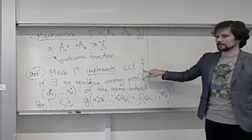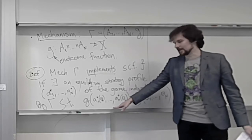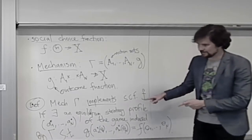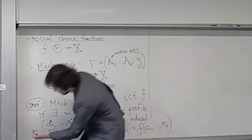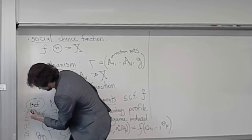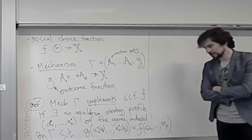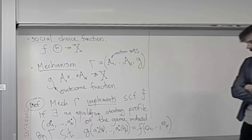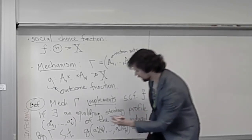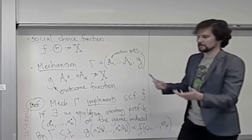However, I want to emphasize this definition is not actually completely formal. Why is it informal despite all the words and mathematical symbols? Exactly — we do not know what an equilibrium means. We do not know what equilibrium concept we are using, and in general there are many different equilibrium concepts. I will ask you to come up with a few of those after the break.